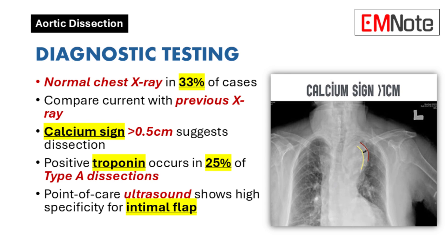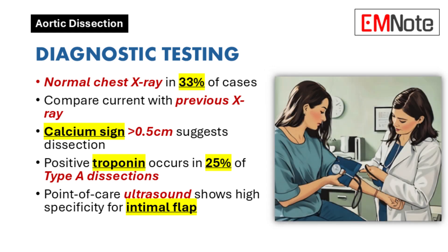Regarding blood tests: a positive troponin level doesn't automatically mean heart attack — about 25% of type A dissections can have an elevated troponin, so keep that in mind. D-dimer testing is not recommended by guidelines for aortic dissection because it's not specific enough, so we shouldn't be relying on it.